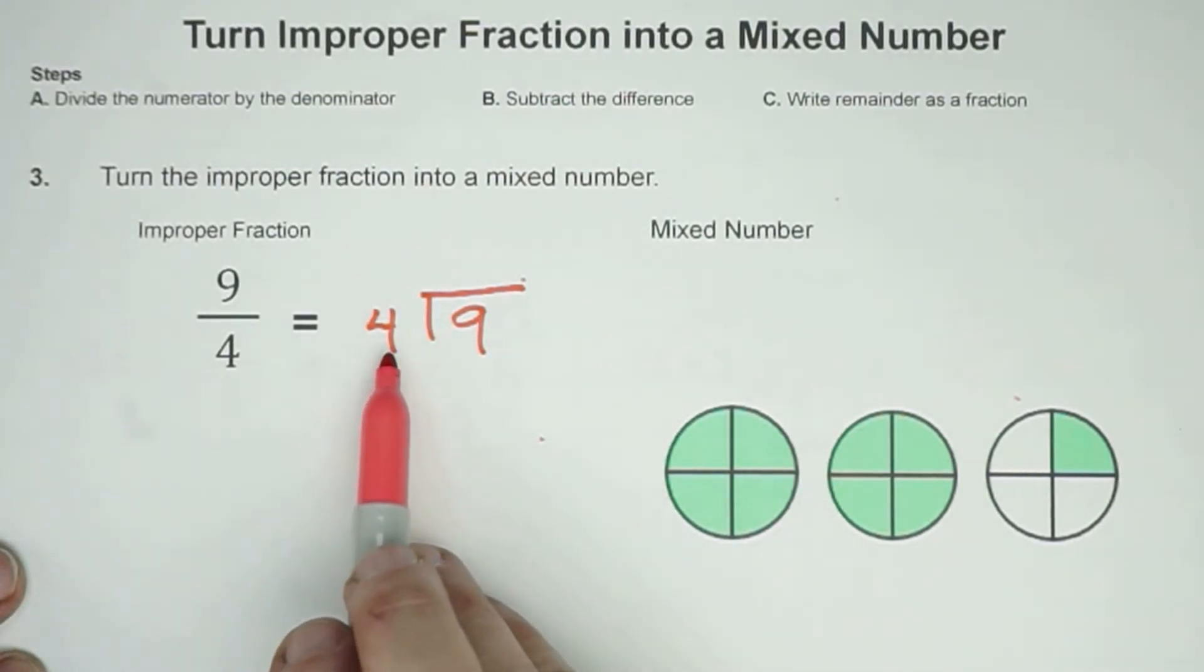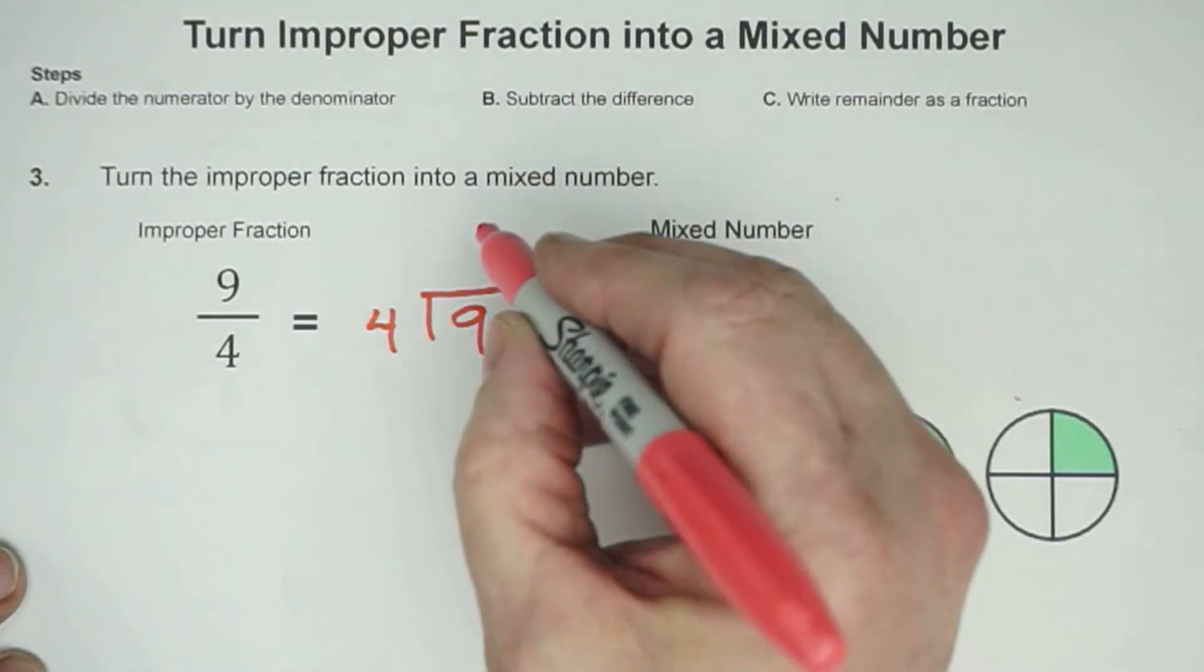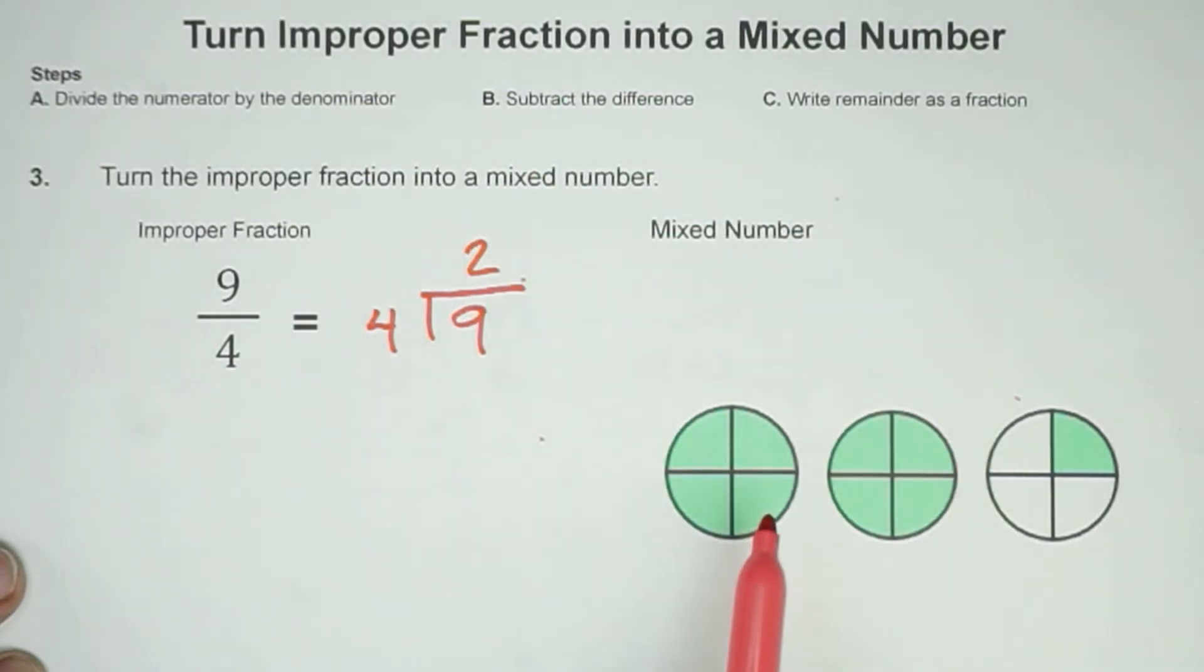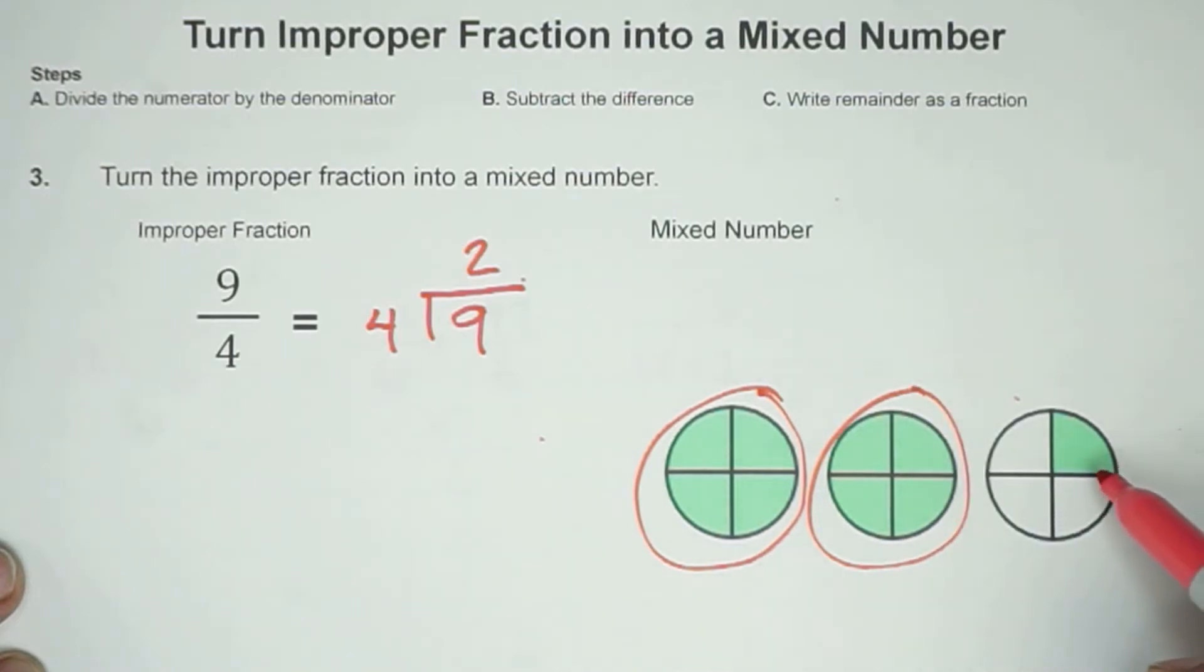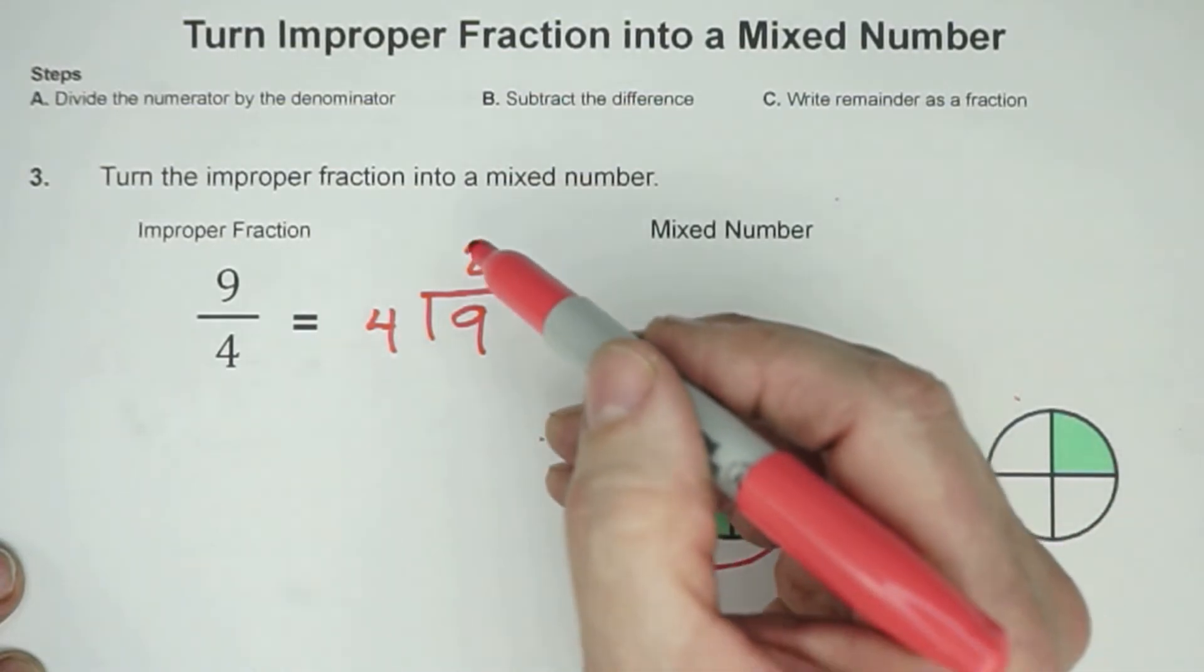And this time, 4 will go into 9 2 times. And I'll show you that on the model. Here we have our 9 slices. 1, 2, 3, 4, 5, 6, 7, 8, 9. And we're looking for groups of 4. So I see here's 1 group of 4. Here's 2. And we can't get a group of 4 there. So this is where we're getting the 2.